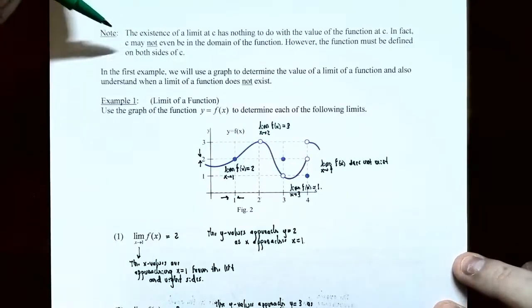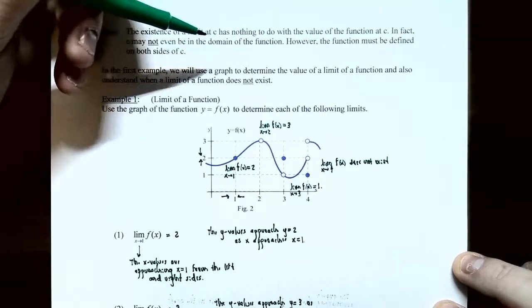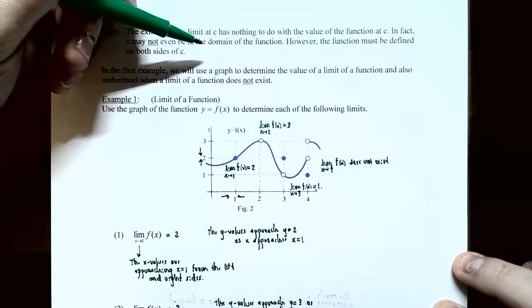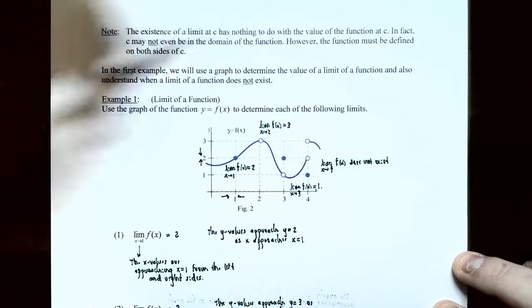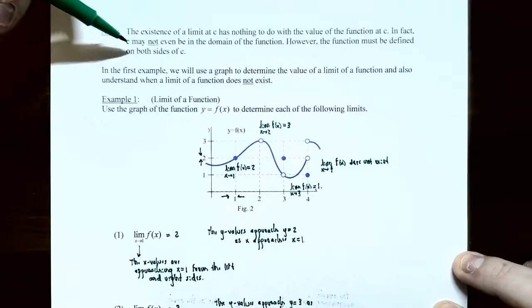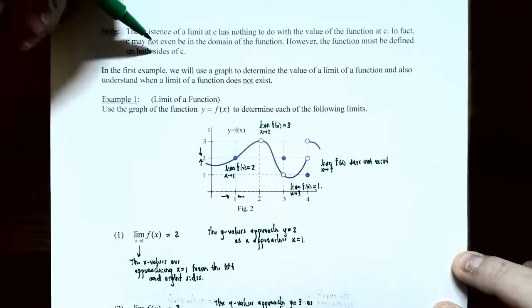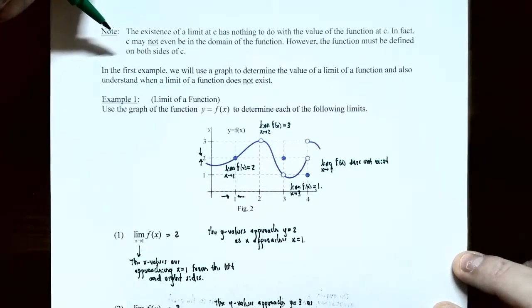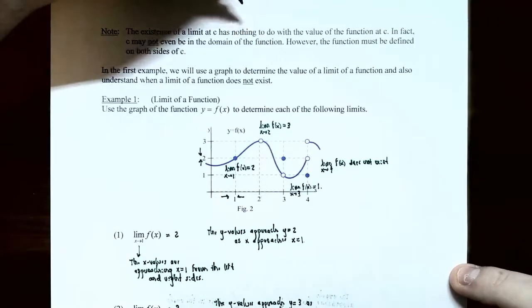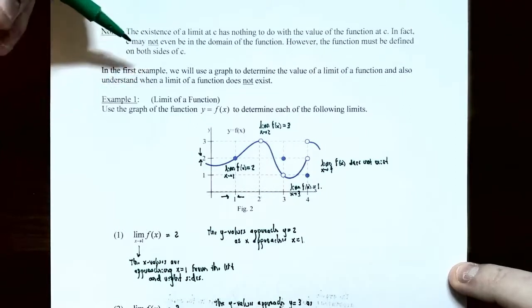The existence of a limit at x equals c has nothing to do with whether the function is defined there or not. It doesn't matter if there's a hole in the graph or a filled-in point. If x equals c is not part of the domain of the function, you'll have a hole in the graph or possibly a vertical asymptote. However, what we do need is that the function must be defined on either side of c — the graph must exist on the left and right side of x equals c.